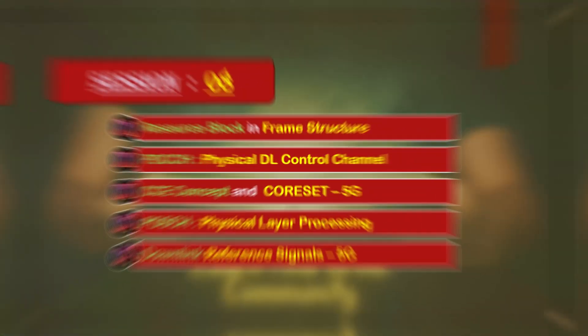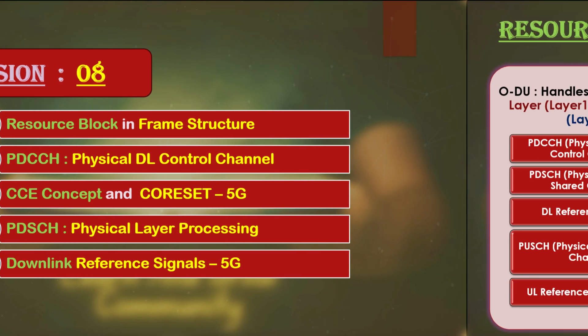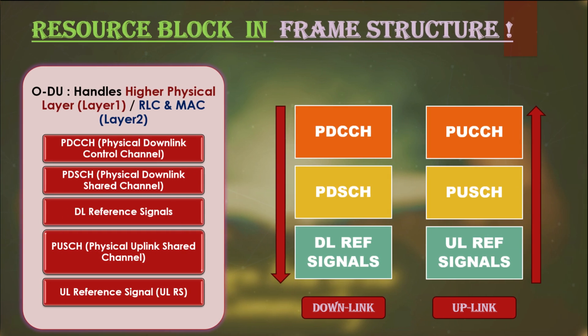In this session we will go through the physical layer architecture of O-DU. If you have an understanding of 5G NR physical layer structure, then this will be easy to understand. In O-DU there are some physical common control channels and also shared channels, present in both the downlink and the uplink, as well as some reference signals.